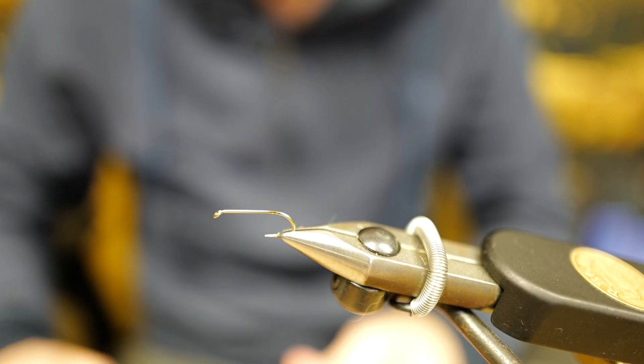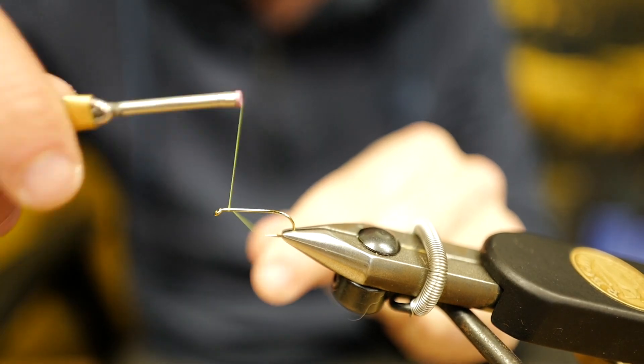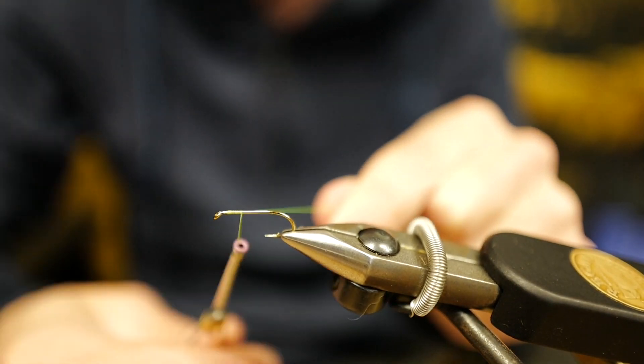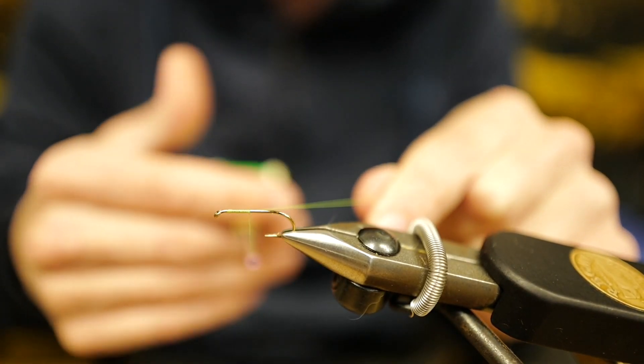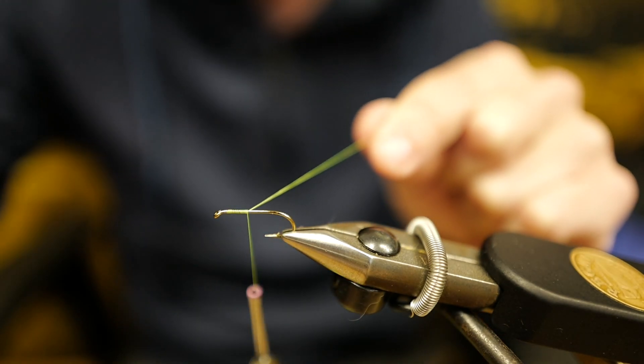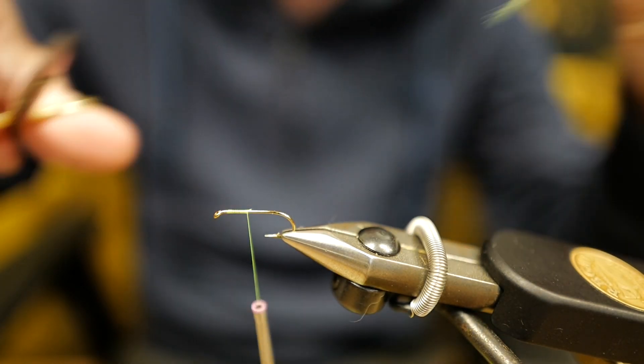Alright, so now we're going to tie the fly with the materials that we found in the back store room here: the mop and the duster material. The other thing you're going to need is some thread—that can be sewing thread or actual fly tying thread—and a pair of scissors.